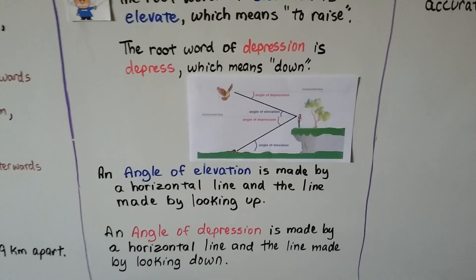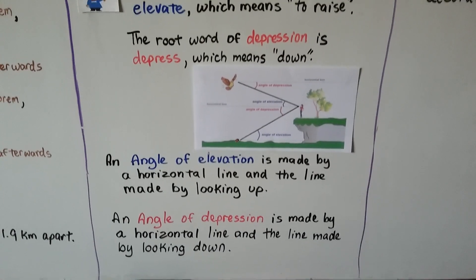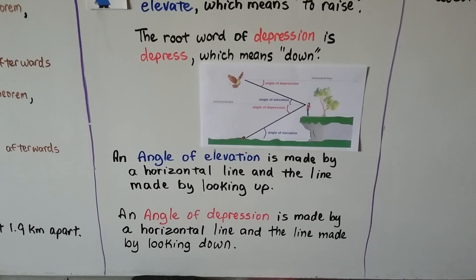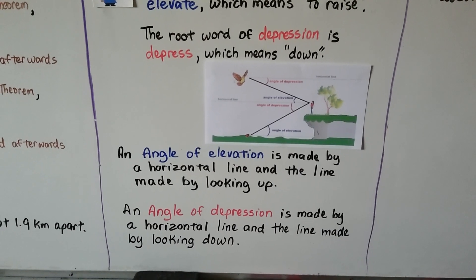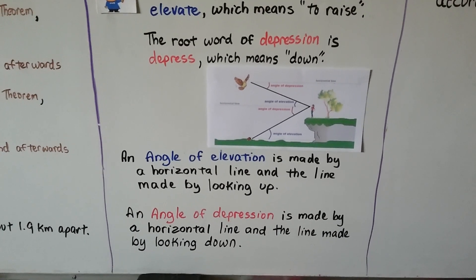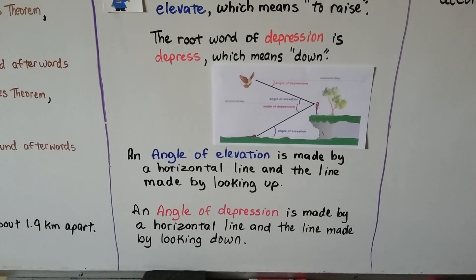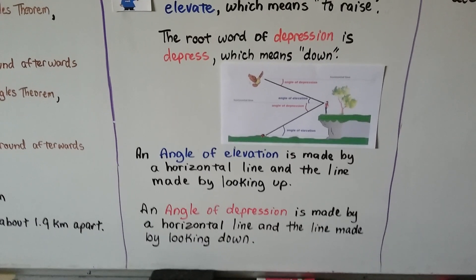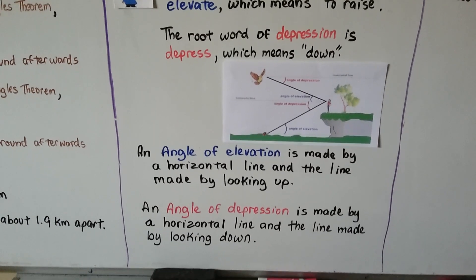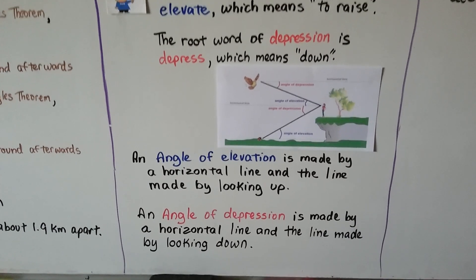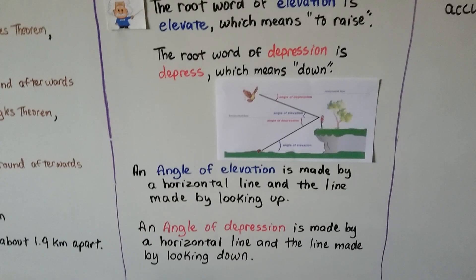An angle of elevation is made by a horizontal line and the line made by looking up — that line of sight. And the angle of depression is made by a horizontal line and the line made by looking down, that line of sight looking down.